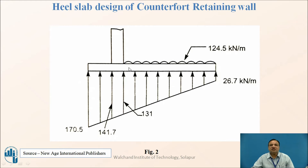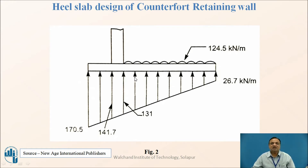This is the section showing pressures already determined in Part 1. In Part 1 we checked stability against overturning, against sliding, and verified the pressure below the base slab. Maximum pressure must not exceed SBC, and minimum pressure must not be negative — otherwise the edge loses contact with the soil and the wall becomes unstable. So stability analysis must be done first.